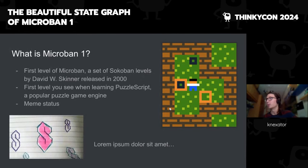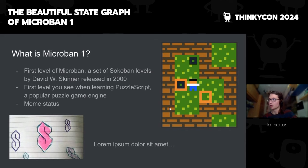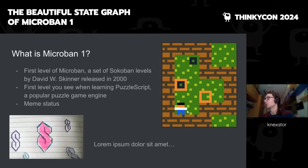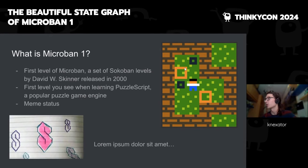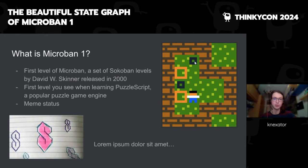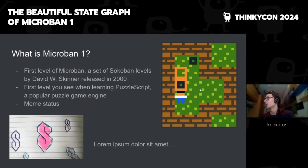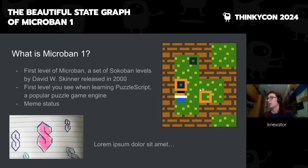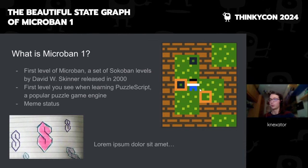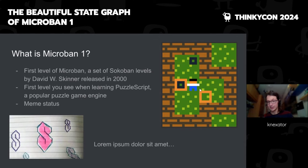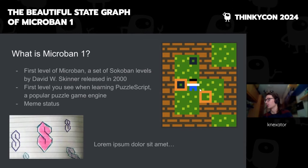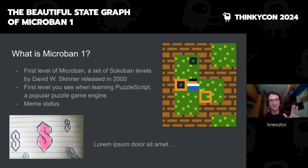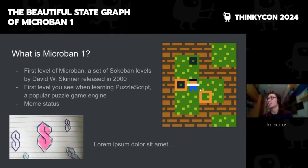Microban 1 is possibly the most famous Sokoban level. Sokoban, for those of you that don't know, is a classic puzzle game where you control a player that moves in a grid, and there are boxes, and there are targets, and you have to get all the boxes into the targets. You can only push one box at a time. This game is really simple, but really universal, and has a huge possibility space — a huge Schneider capacity, as a little would say.